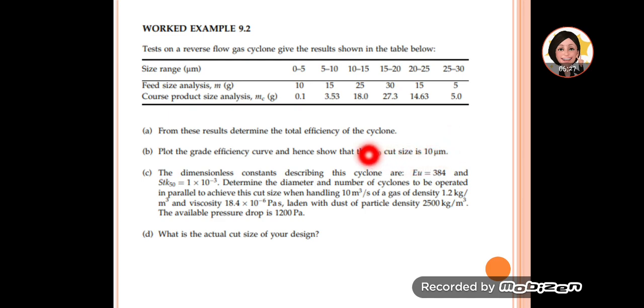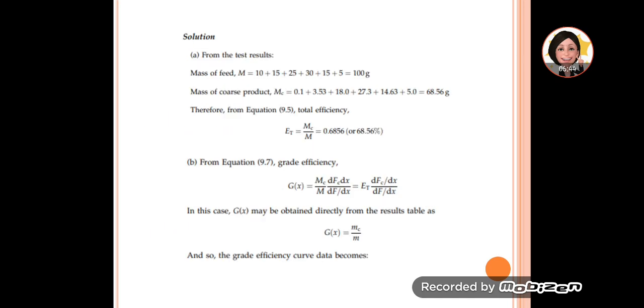We plot the grade efficiency curve to show the X50 cut size of 10 micrometer. We have to determine the diameter and number of cyclones to be operated in parallel. This is similar to worked example 9.1. What is the actual cut size of your design after the changes?